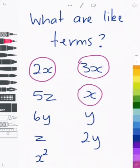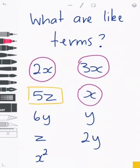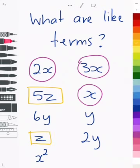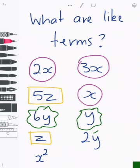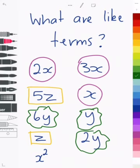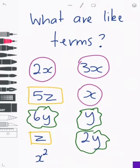They're not like terms. Let's choose another colour and go on to the next term which is 5z. Now 5z has like terms of only z there. So you can see 5z and z are like terms. Now 6y, its like terms is y and 2y. So all the green are like terms. And finally x squared is its own term there. So now you understand what like terms are.